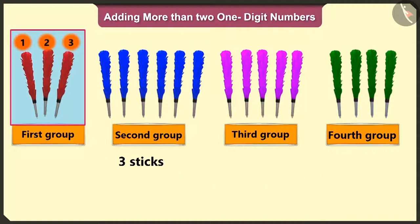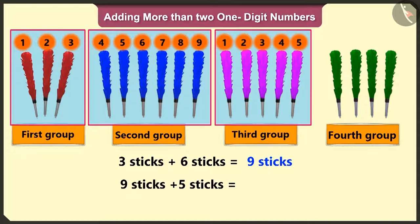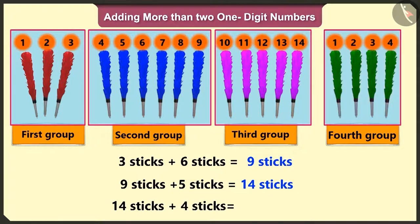Let us add three and six sticks and count after three: four, five, six, seven, eight, and nine sticks. To these nine sticks, add five more sticks. So count after nine is ten, eleven, twelve, thirteen, and fourteen sticks. To add fourteen to four more sticks, count after fourteen is fifteen, sixteen, seventeen, and eighteen. The magician has a total of eighteen sticks.